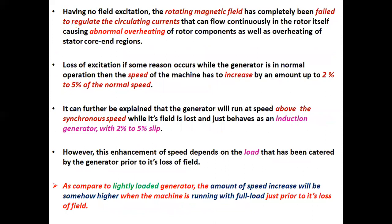With no field excitation, the rotating magnetic field has completely failed to regulate the circulating currents that can flow continuously in the rotor itself, causing abnormal overheating of rotor components as well as overheating of stator core end regions. If loss of excitation occurs while the generator is in normal operation, the speed of the machine has to increase by an amount up to 2% to 5% of the normal speed. The generator will run at speed above the synchronous speed while its field is lost, and just behaves as an induction generator with 2% to 5% slip.